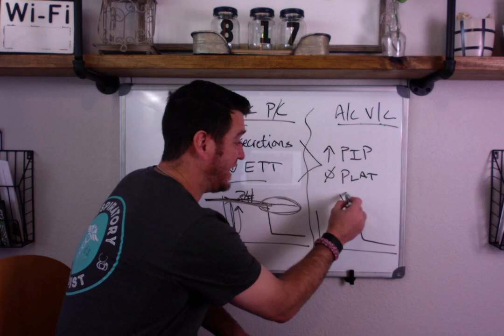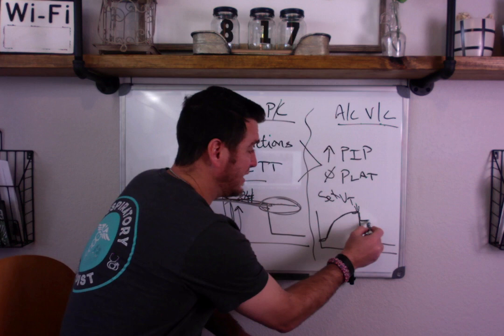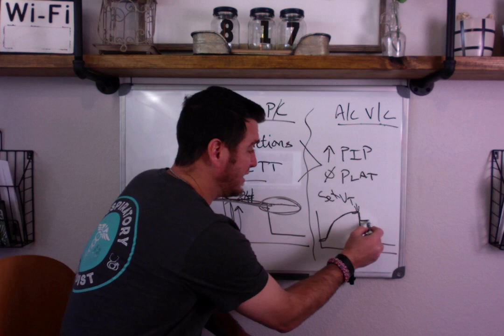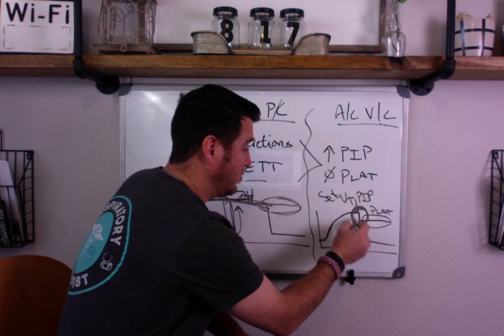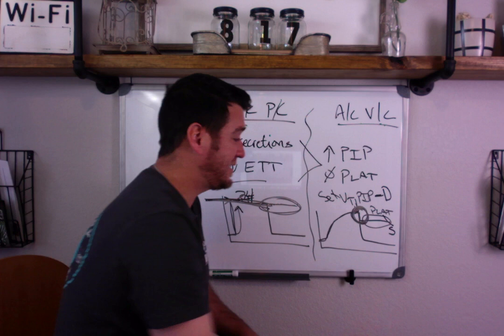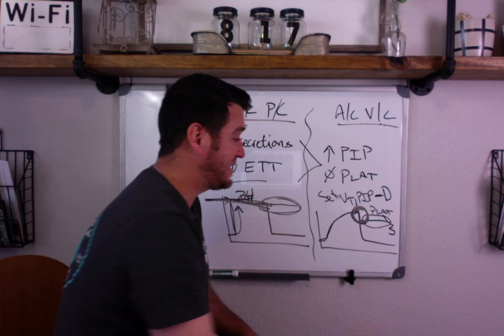Now in volume control, when you do an inspiratory hold, the vent gives the set tidal volume and then when you hold, you see a drop. This is your plateau. This is your PIP. The difference between the two is a reflection of your airway resistance. You use PIP to establish dynamic compliance. You use PLAT to establish static compliance.